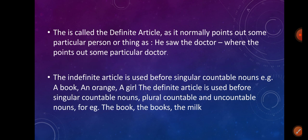The word 'the' is called the definite article, as it normally points out some particular person or thing. For example, 'he saw the doctor,' where 'the' points out some particular doctor. The indefinite article is used before singular countable nouns — for example: a book, an orange, a girl. The definite article is used before singular uncountable nouns, plural countable and uncountable nouns — for example: the book, the books, the milk, etc.